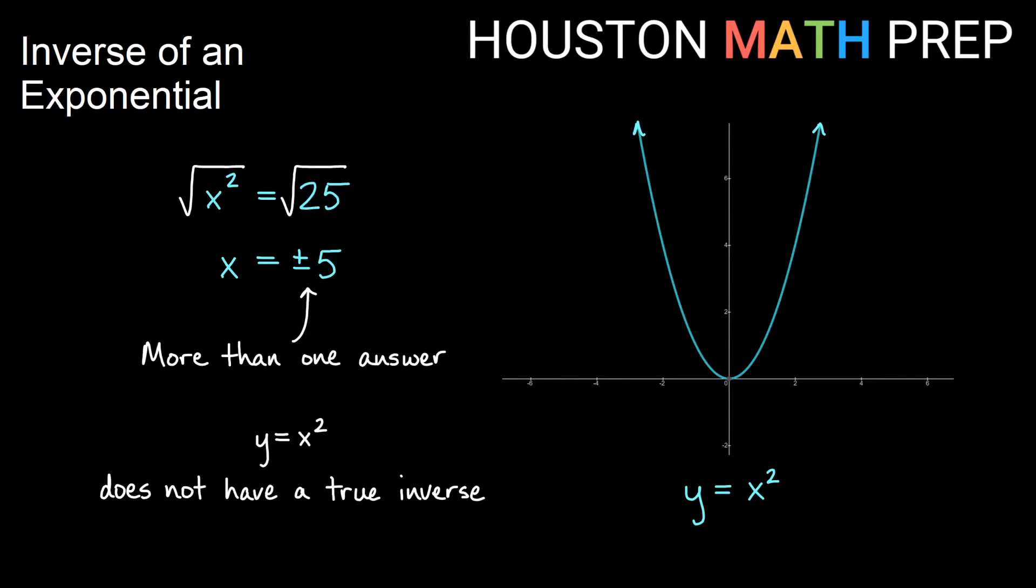You've possibly checked before to see if something has an inverse, and the way that we do that is to see if the graph is one-to-one or if the graph passes the horizontal line test. If I draw a horizontal line to the graph of y equals x squared,